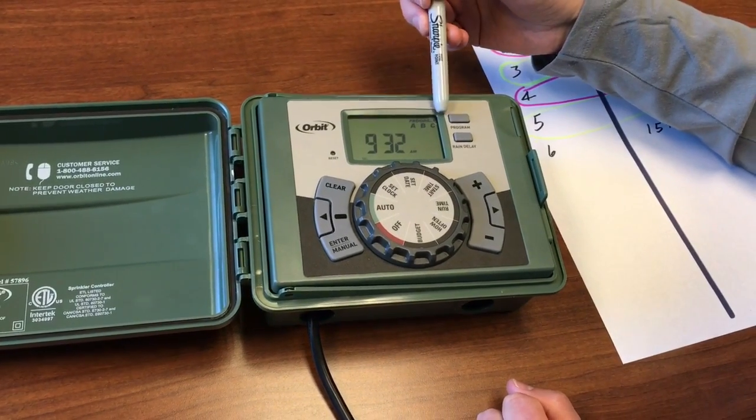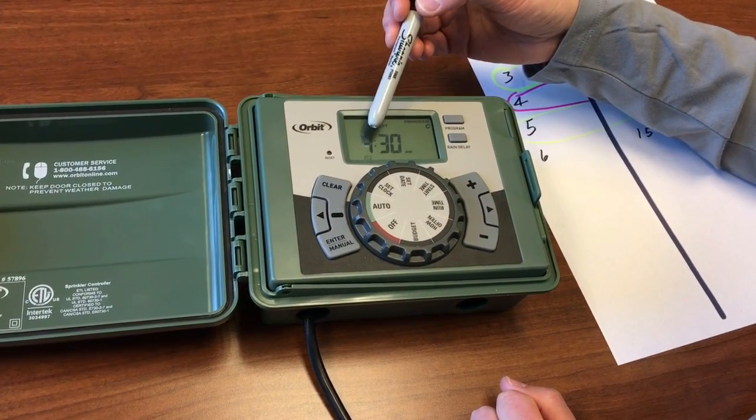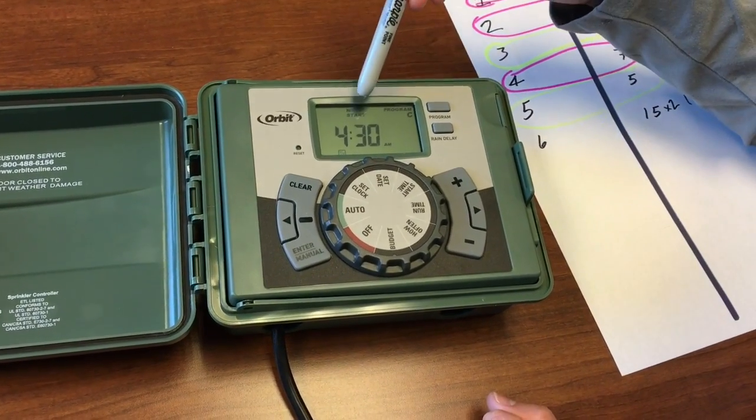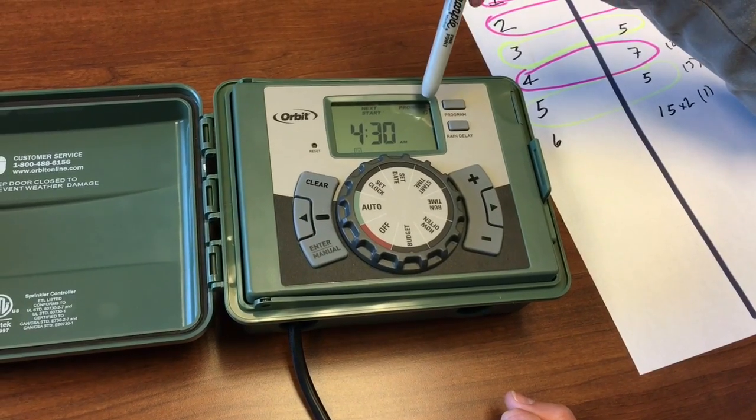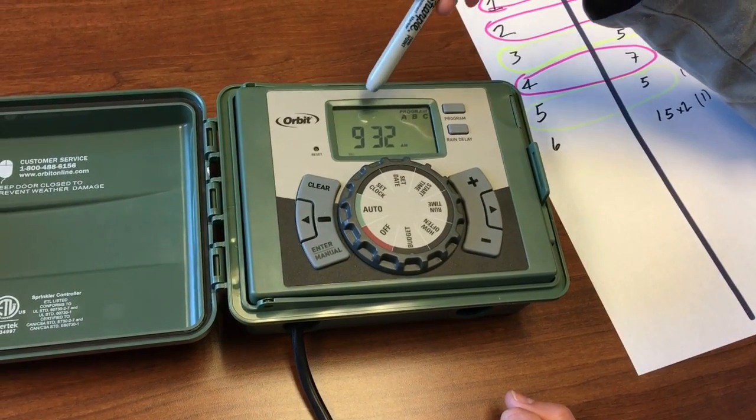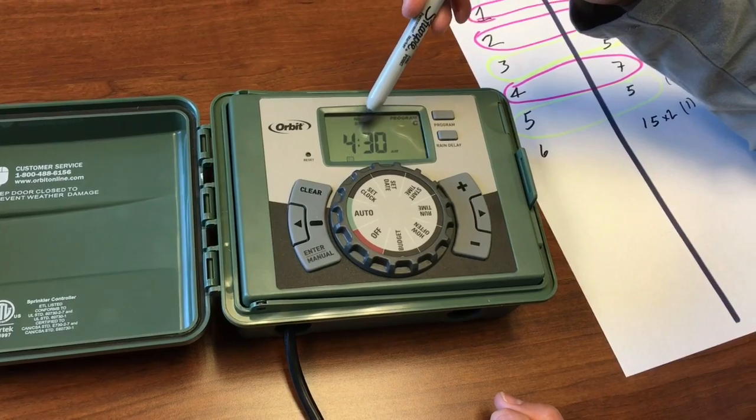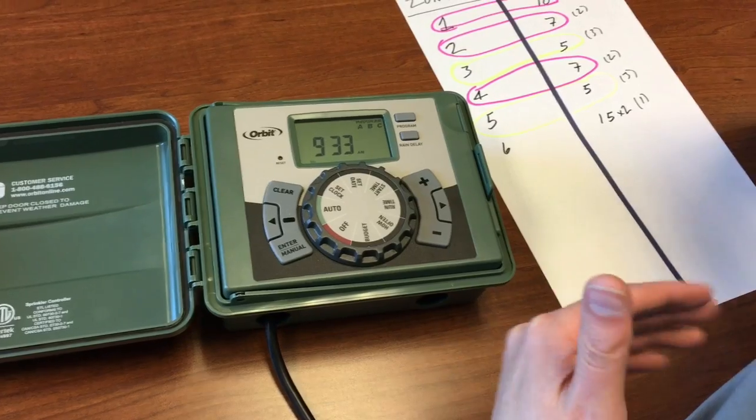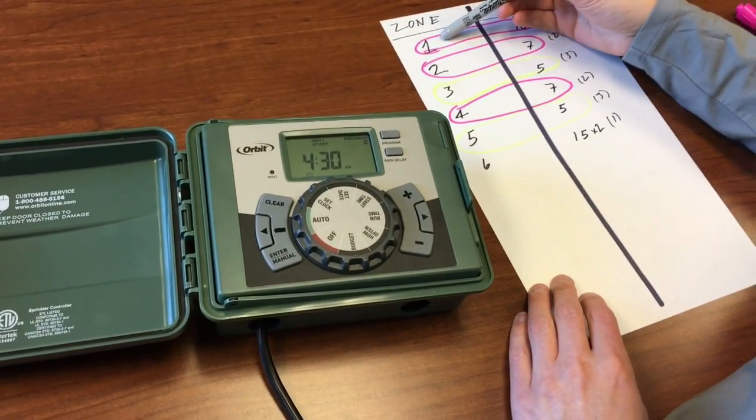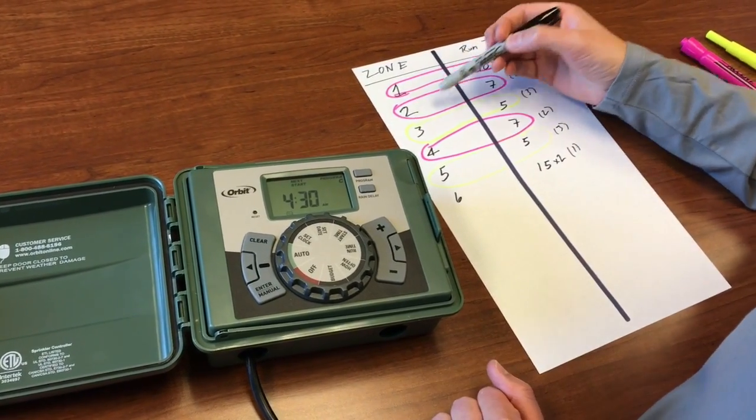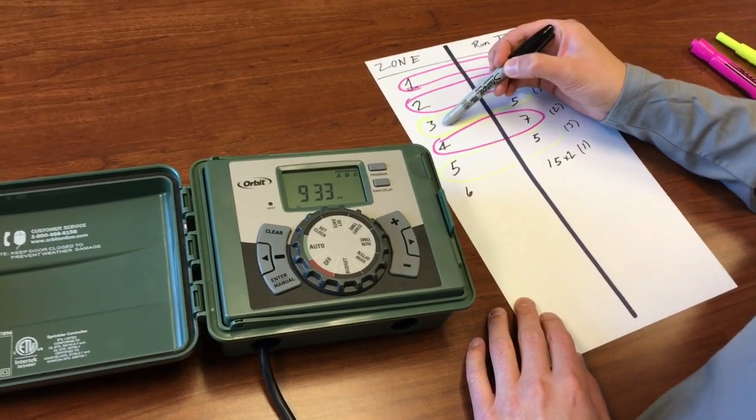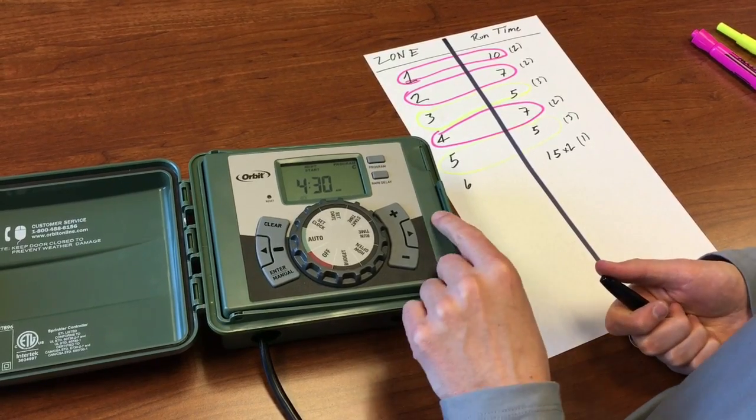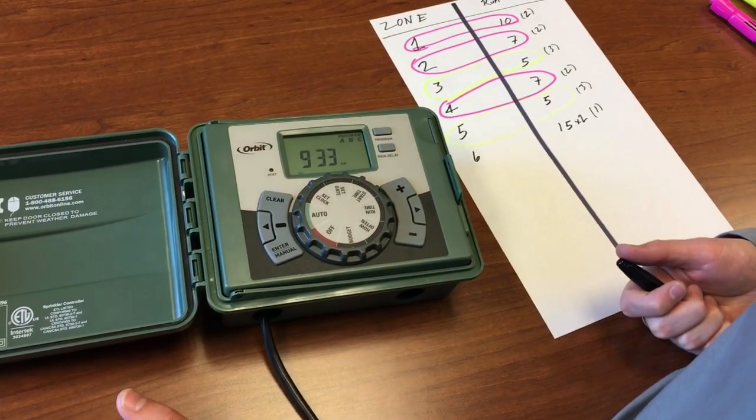You're going to see that the screen flashes back and forth between the current date and time, which the day being Monday and the time being 9:32, and then it tells you the next start time. Next start time is going to be program C at 4:30. Then it starts the interval so that the next start time for program A is going to be the day after tomorrow, and the next program for program B where it's every three days is going to be two days from now. This is just giving you information of what's coming up.